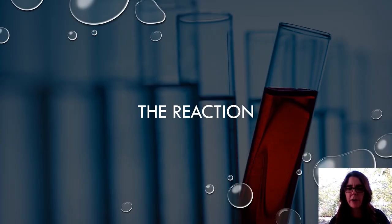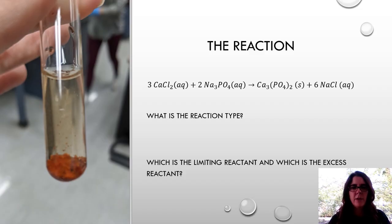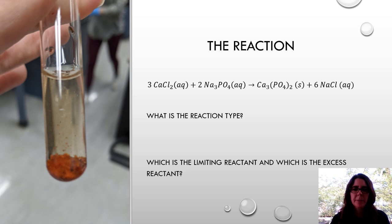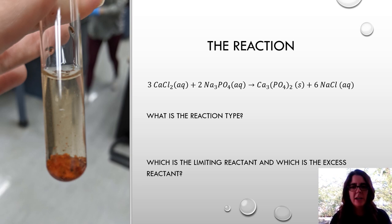First, we're going to go through the reaction — the mechanics of it and what you're going to be seeing in lab today. The reaction is three moles of calcium chloride solution plus two moles of sodium phosphate solution to yield one mole of calcium phosphate and six moles of sodium chloride. We always start with a nice balanced reaction.